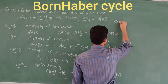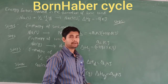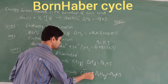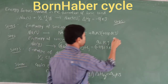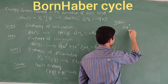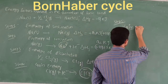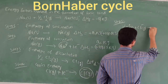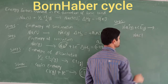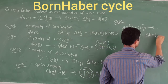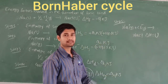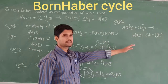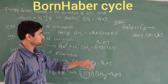Step five involves combining one mole of gaseous Na⁺ and one mole of gaseous Cl⁻ to obtain NaCl. This is denoted as delta H = U, where U is the lattice enthalpy, expressed in kilojoules. This completes the five steps of the Born-Haber cycle.